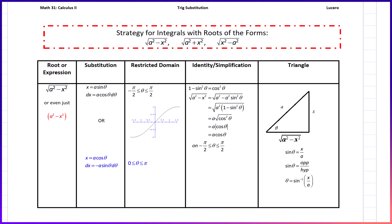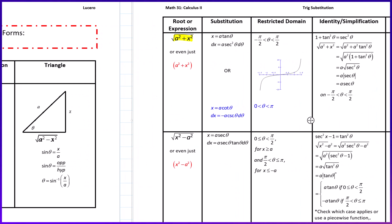If it's of the form a² minus x², we're going to use x equals a sine of theta. If it's of the form a² plus x², we use x equals a tangent of theta. If it's of the form x² minus a², we use x equals a secant of theta. We do have some specific restrictions on the domain for that one based on what is given for x, or we have to think about it in two different ways.